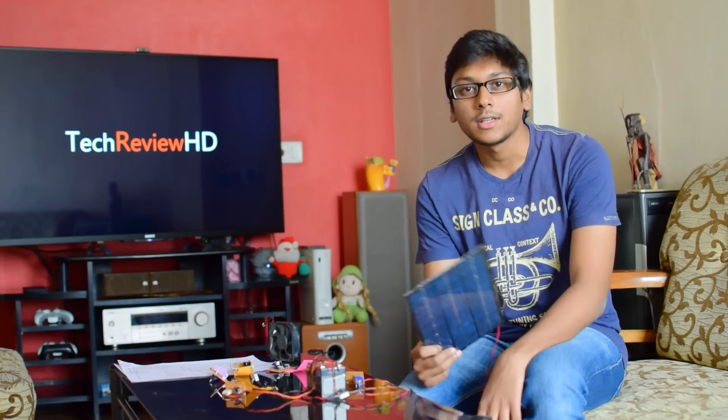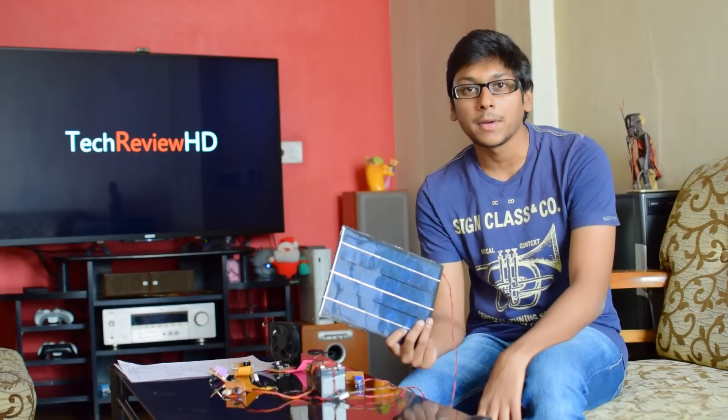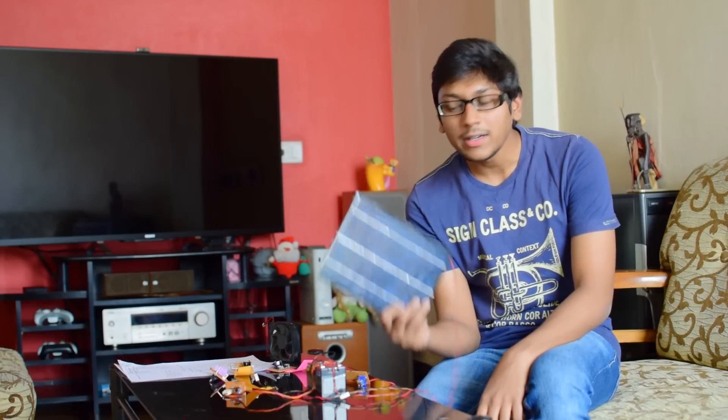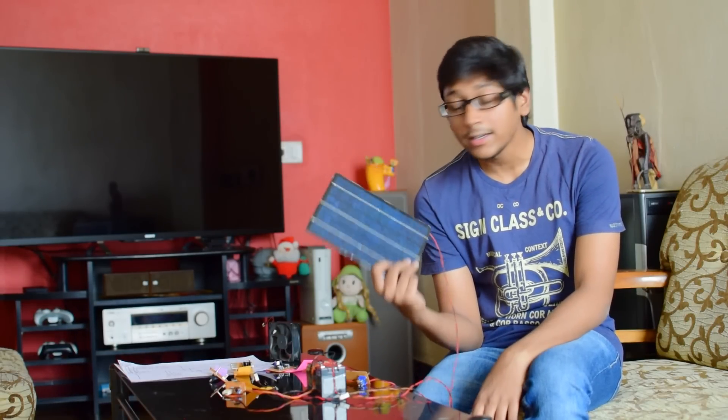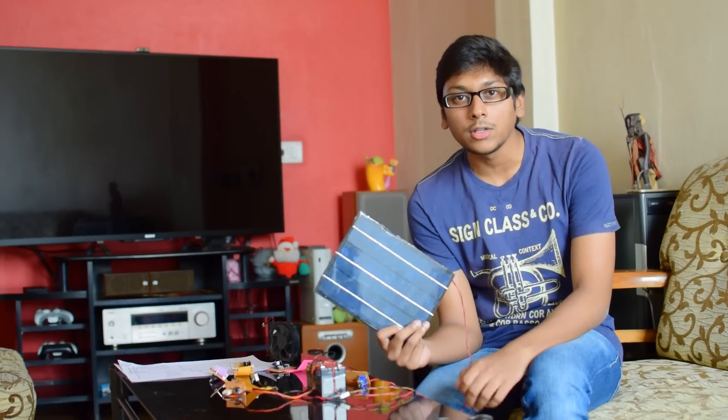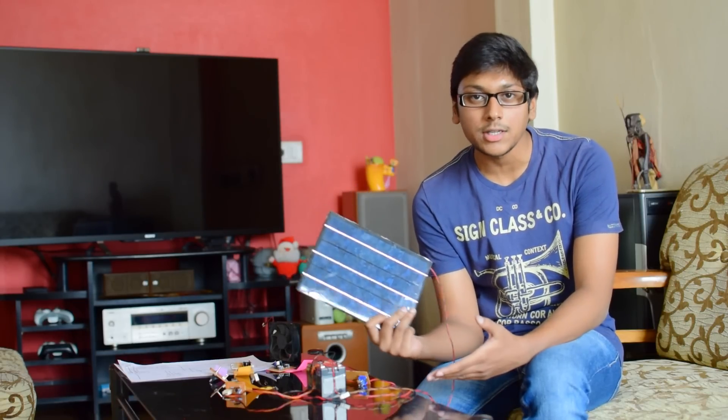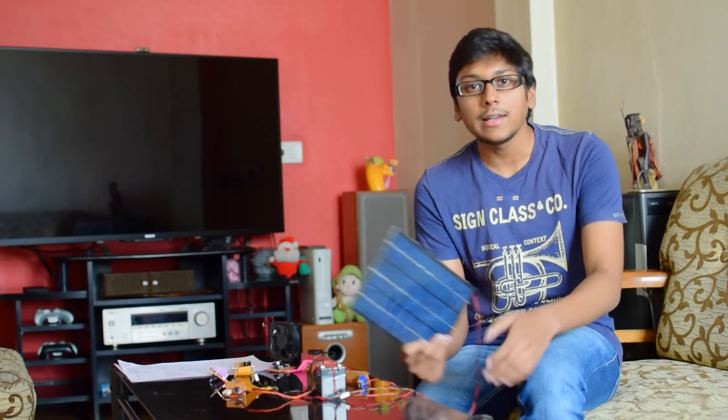The solar panel I am using is a 12 volt 350 milliampere one. During day time you can directly use the solar panel to run any lighting or any application, but later if you want to use it at night you can use a battery. You can use a rechargeable battery to store that solar energy and use it later.